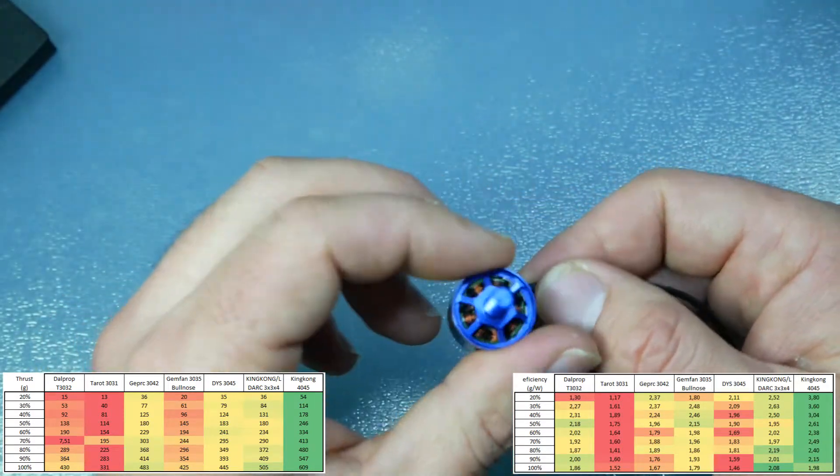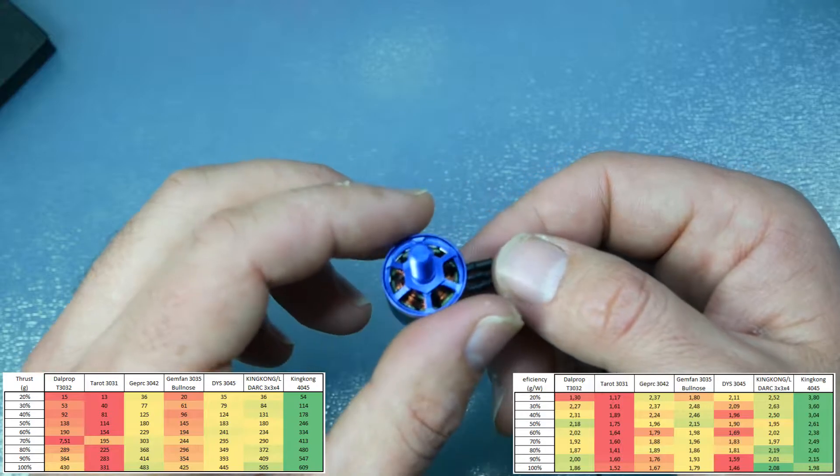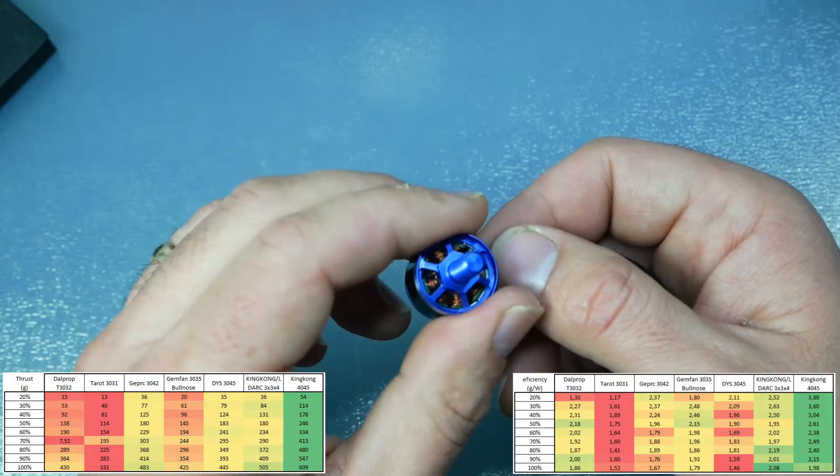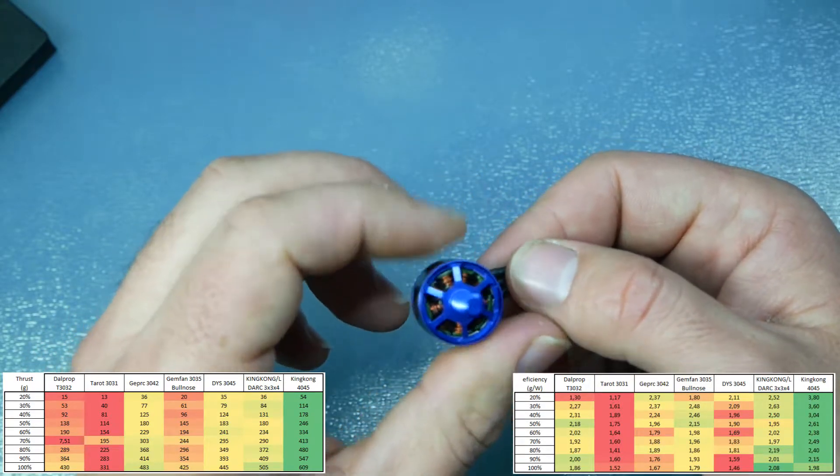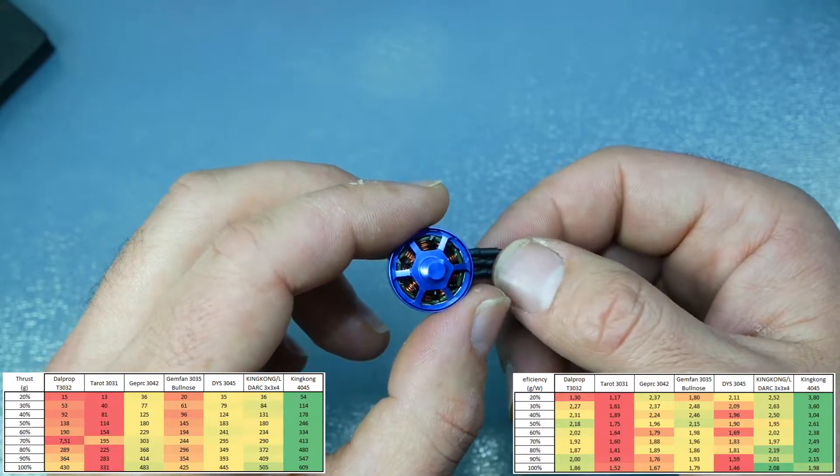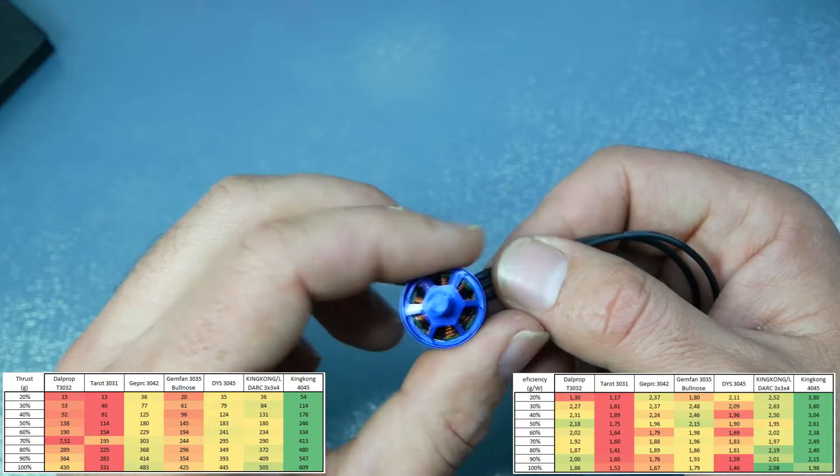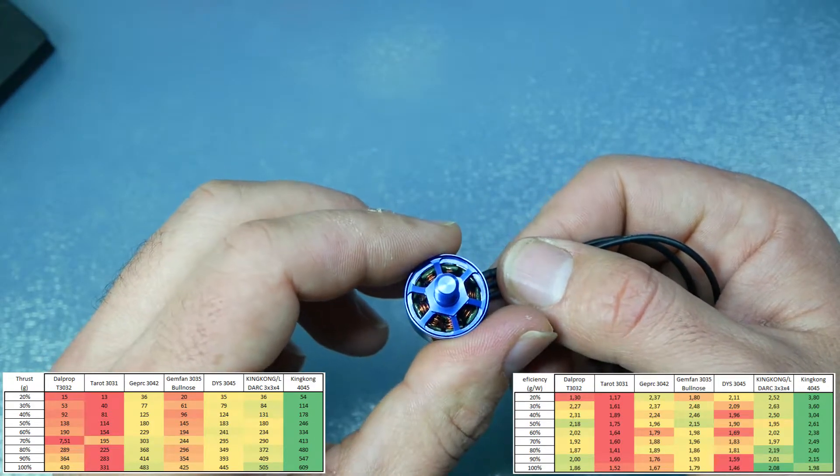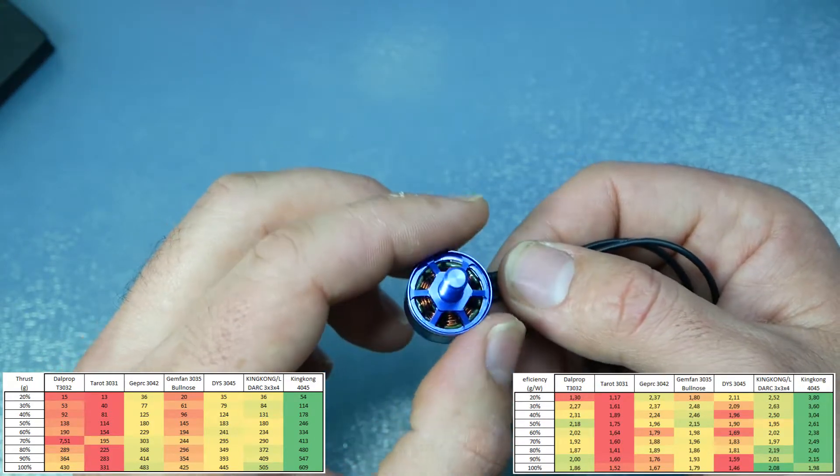On 4 inches, I achieved 610 grams. And the consumption for that kind of thrust was a little bit higher, almost 20 amps. But it gave a nice thrust result.